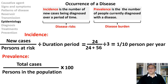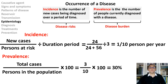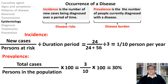Prevalence is the number of affected persons in a population divided by the total number of persons in the population, multiplied by 100. For example, if 3 out of 10 are sick, that is 30% prevalence. The number of incidence and prevalence can be the same in short or quickly treatable diseases, but prevalence will be much higher in chronic or untreatable conditions.